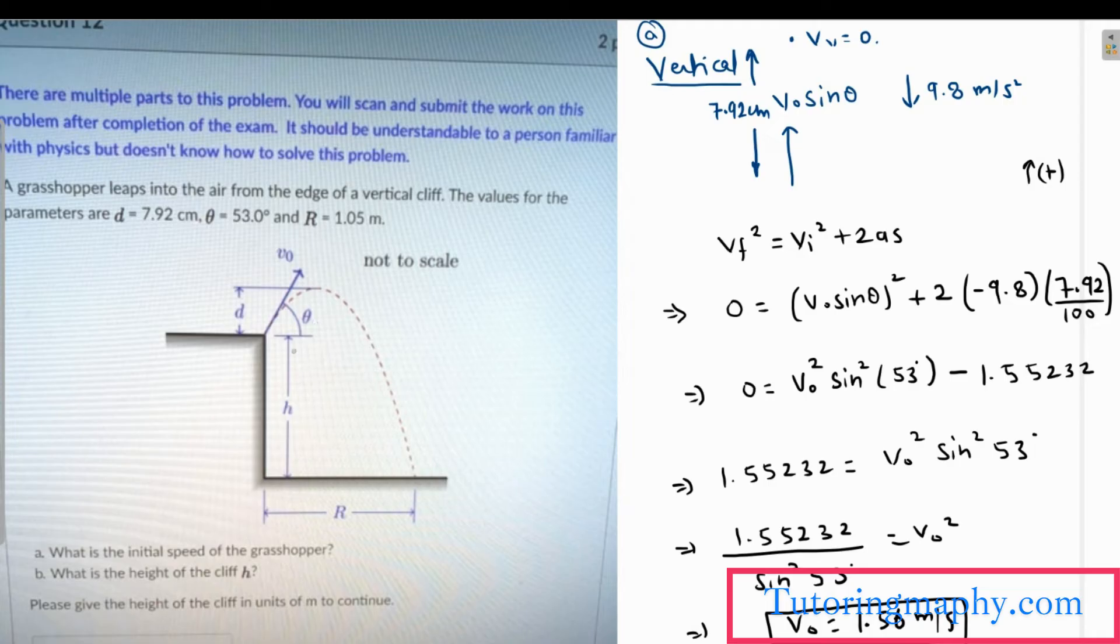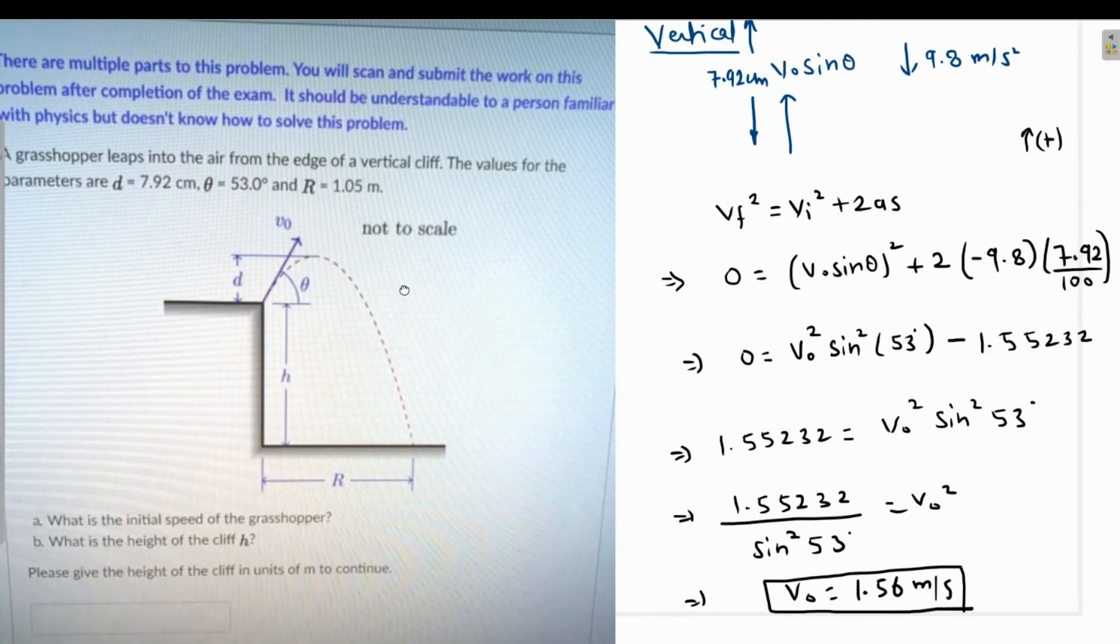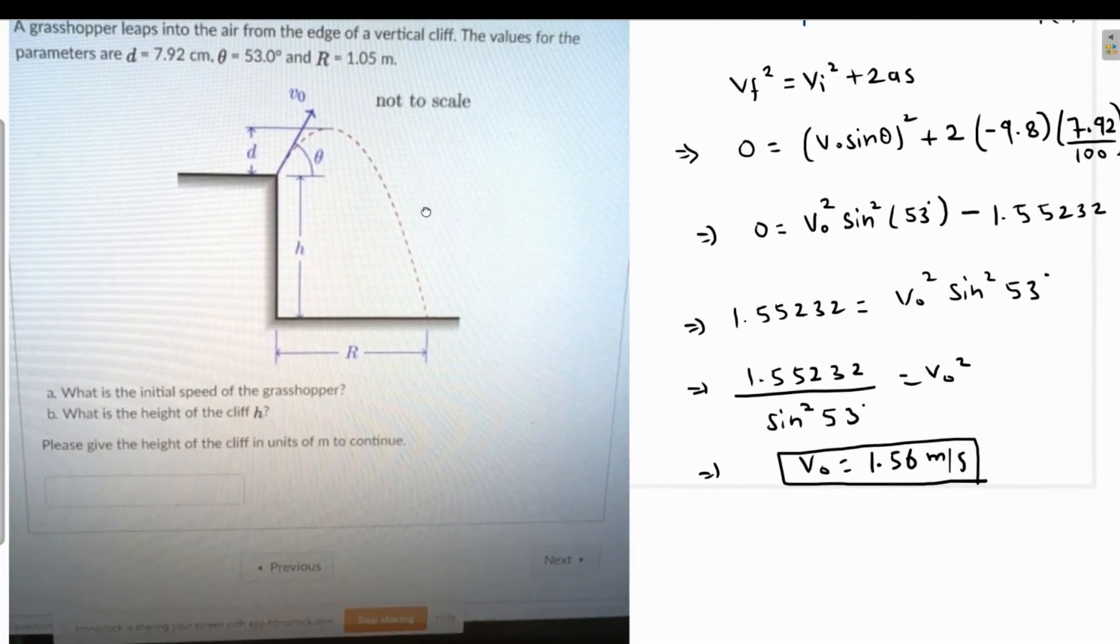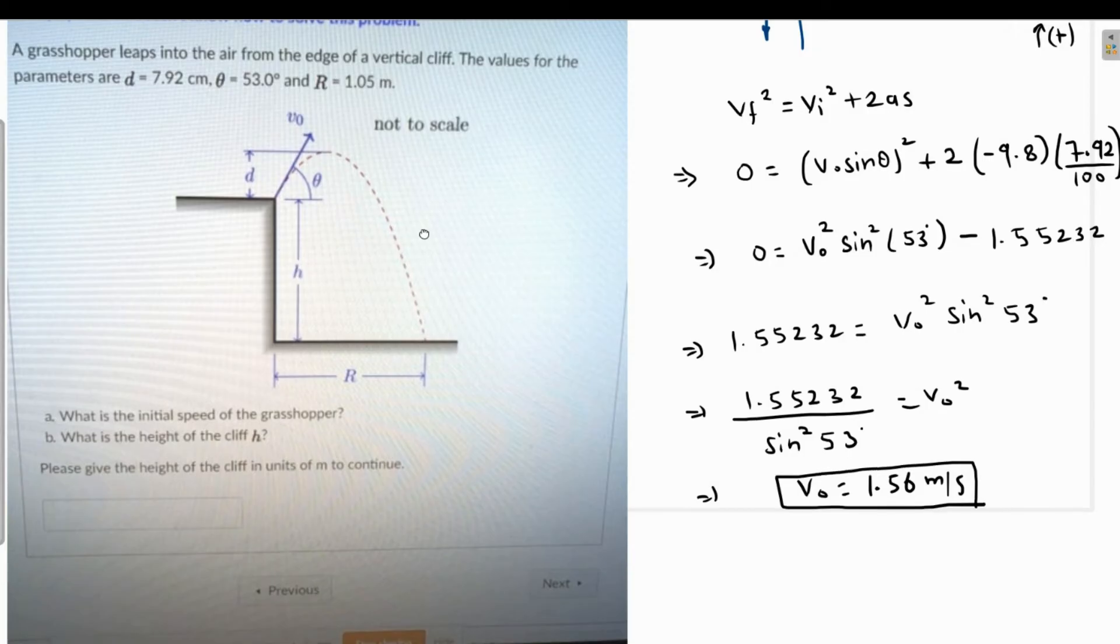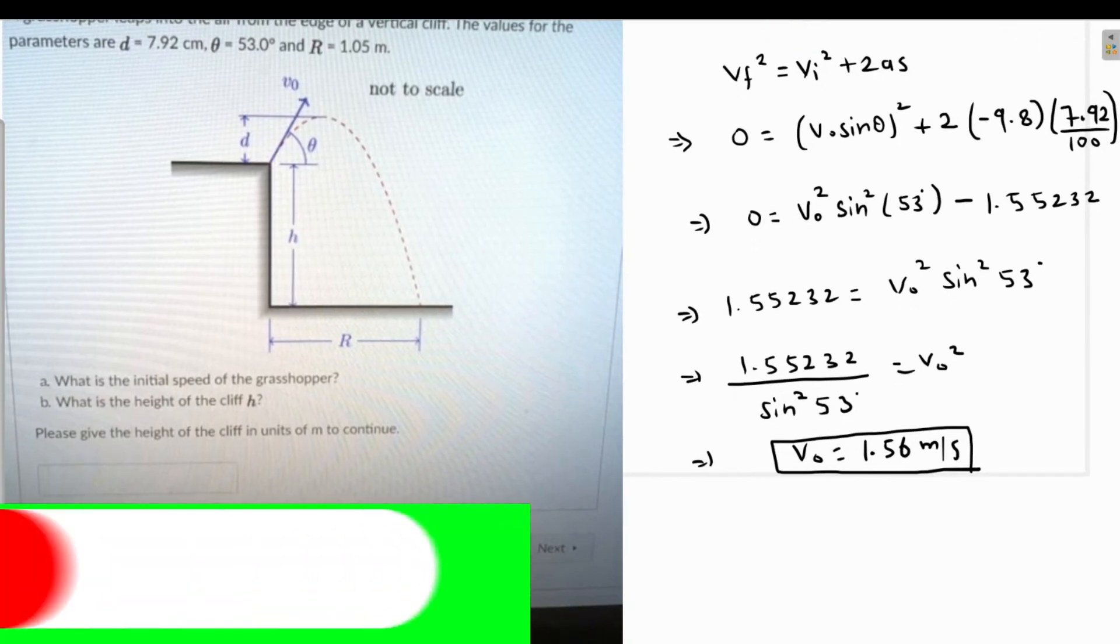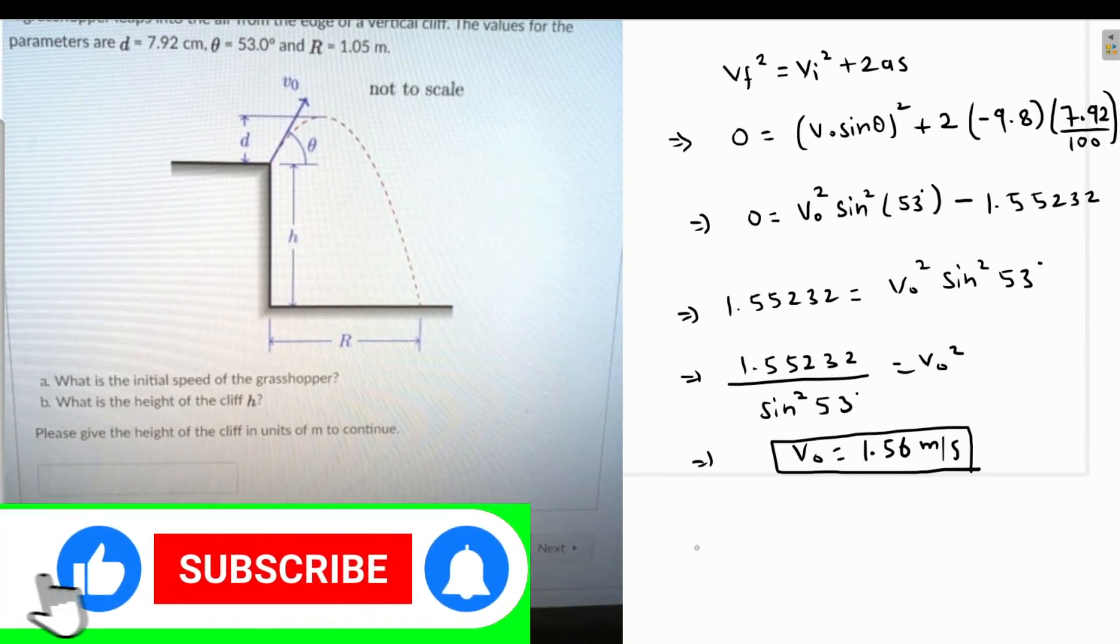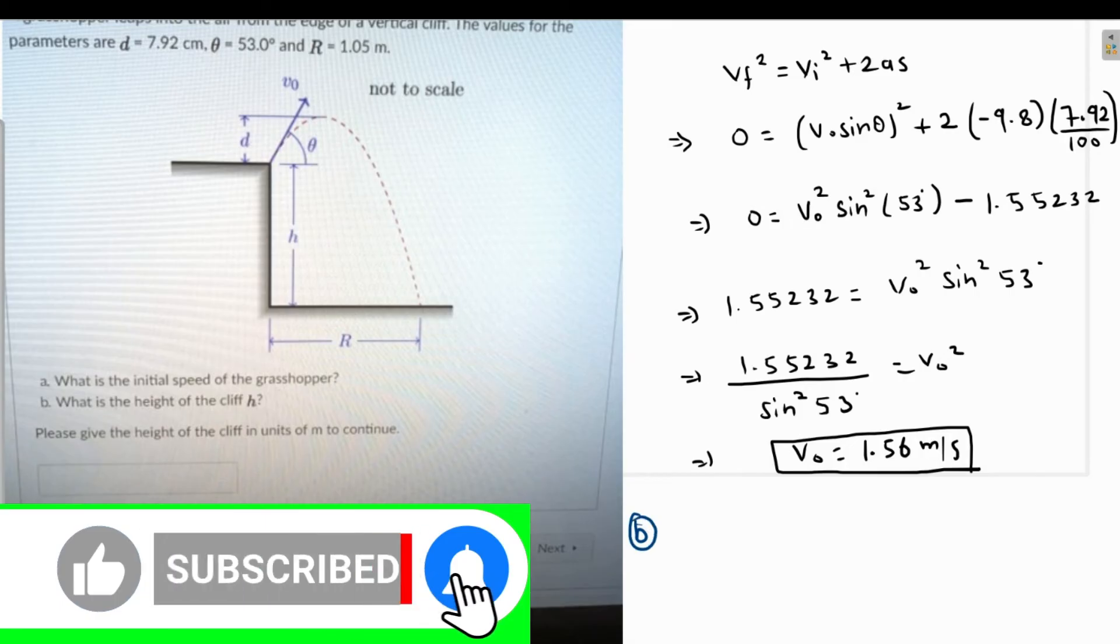Then it's asking for the height of the cliff. Let's find the time of flight because finding the time of flight would be easy since we now know the horizontal component of the velocity as well.